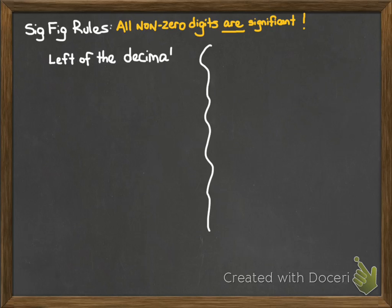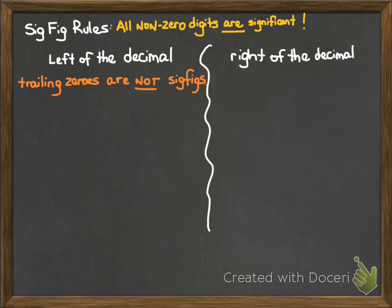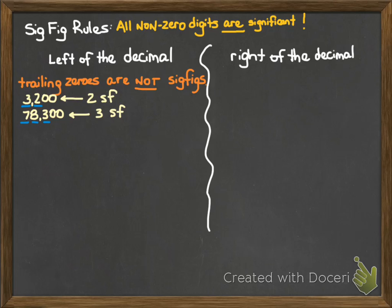I'm going to split up the chalkboard here. There is a rule that's specific to the left and right side of the decimal. If we're dealing with numbers to the left-hand side of the decimal, then trailing zeros are not significant. Let's take a look at an example: the number 3200. That's actually got two sig figs — the three and the two are significant, but the following two zeros are not. How about the number 78300? That one's got three sig figs. We know that the non-zero digits are significant, and the trailing zeros after the three are not significant. So that's got three sig figs.